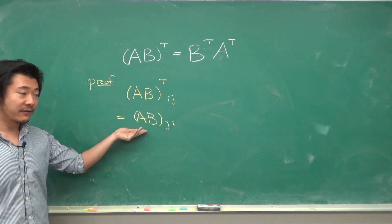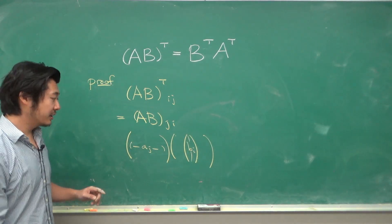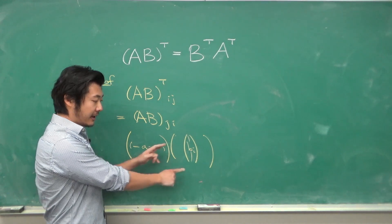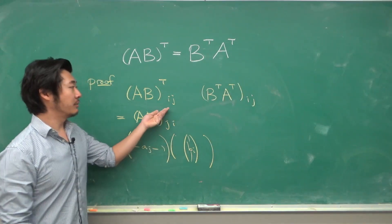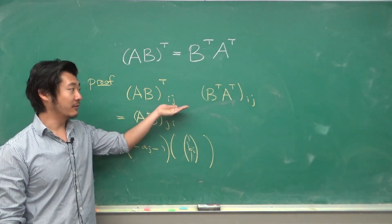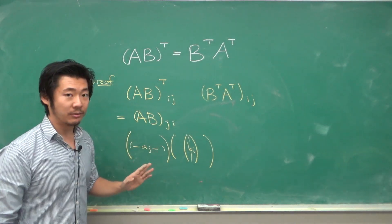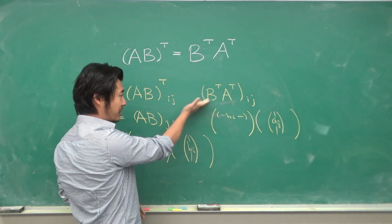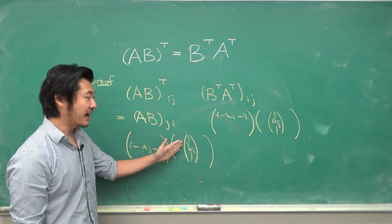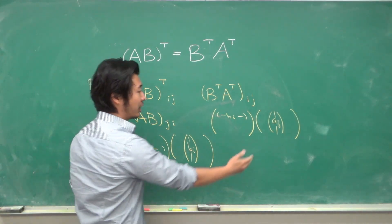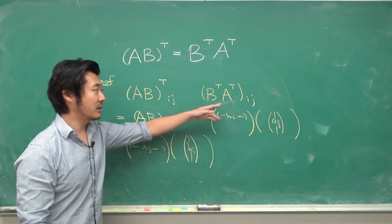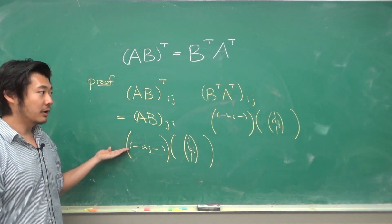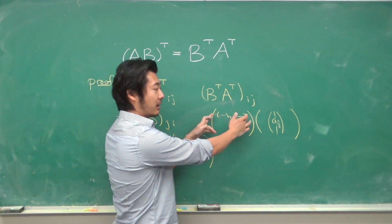We take the dot product of the j-th row of A and the i-th column of B. To compute the i-jth component of B transpose A transpose, it will be the i-th row of B transpose, which is the same as the i-th column of B, and the j-th column of A transpose, which is the same as the j-th row of A. Then we take the dot product, row times column.